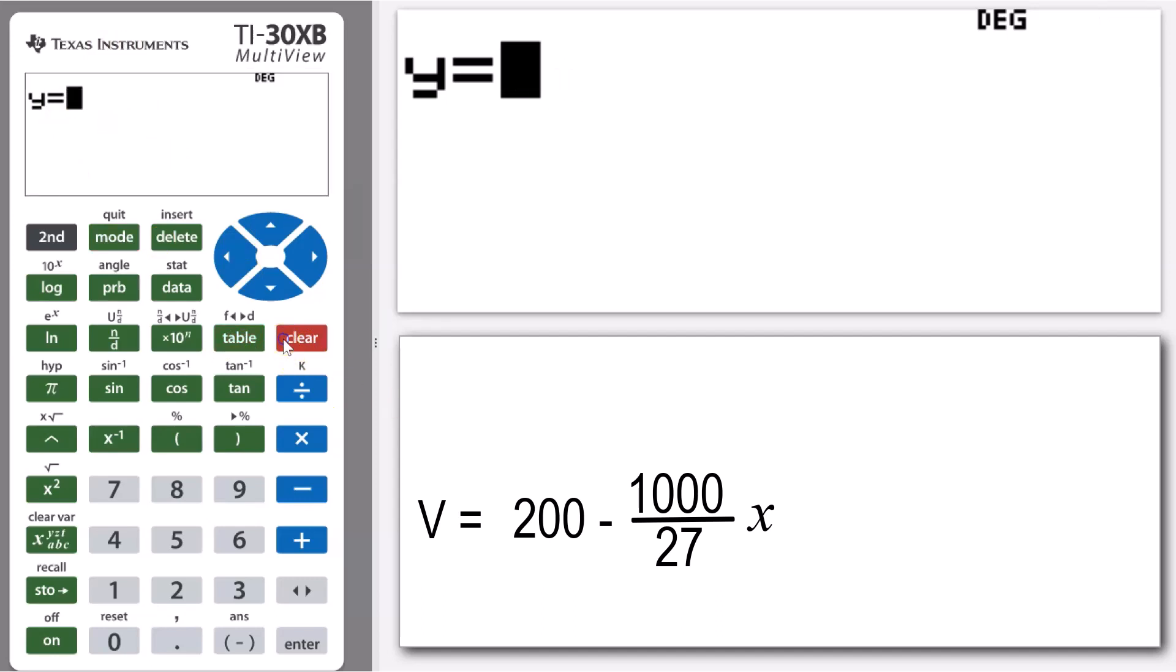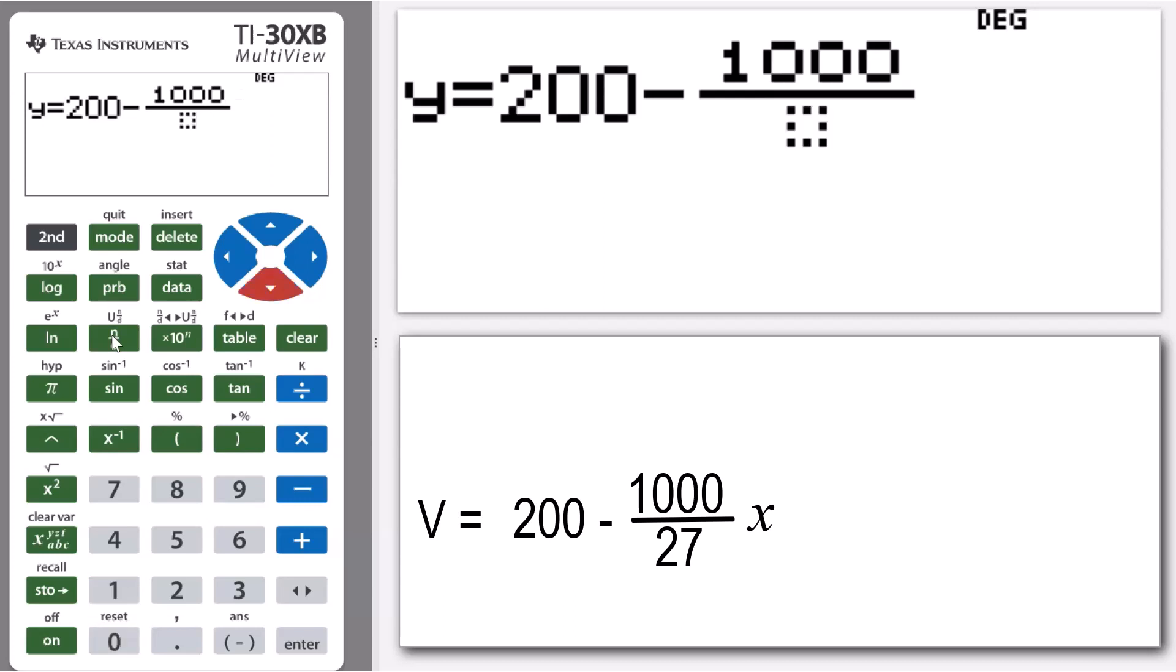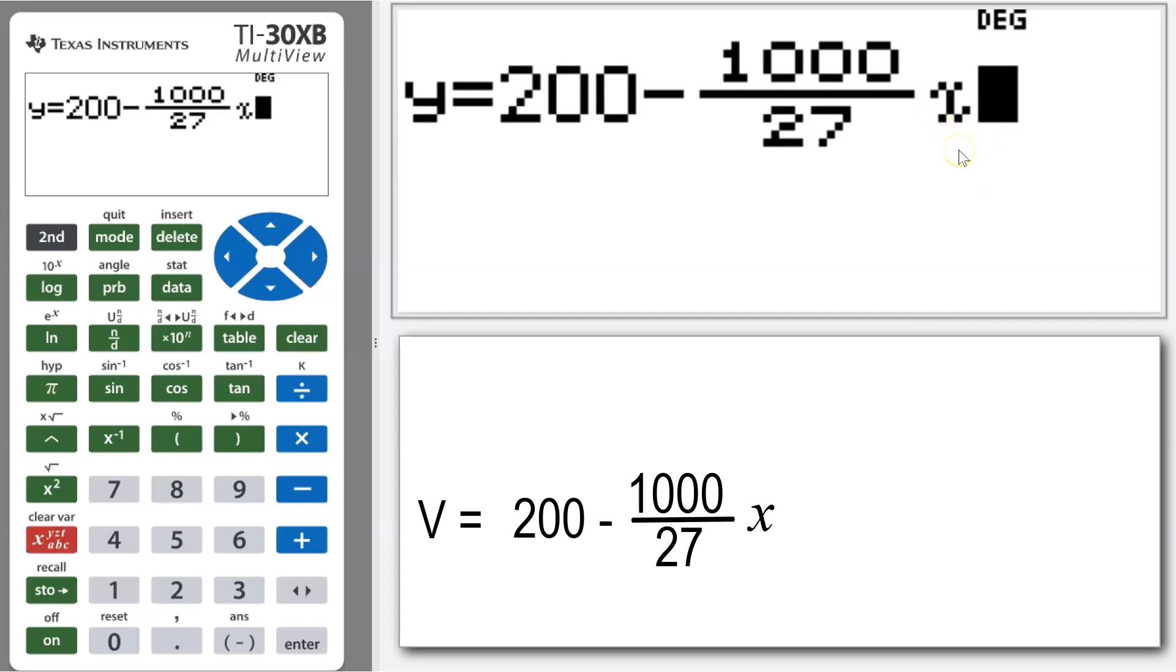There's already an equation in there. I'm just going to get rid of that and I can type it in. So Y again is my volume, and then my equation is 200 minus, as a fraction, 1000 over 27, and then my variable X, which again, just a reminder, it's the time since the plug's been pulled out.